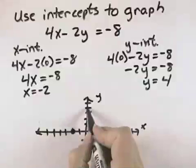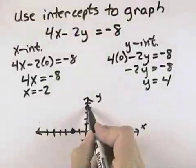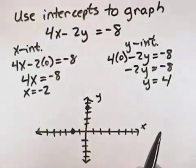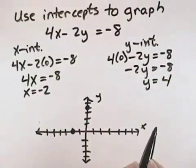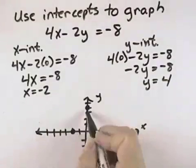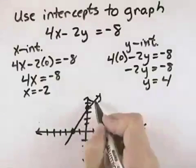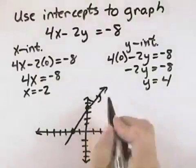So counting up on the y-axis, our graph will cross the y-axis at 4. We have our 2 intercepts, and we connect them and extend through them with the graph of our line.